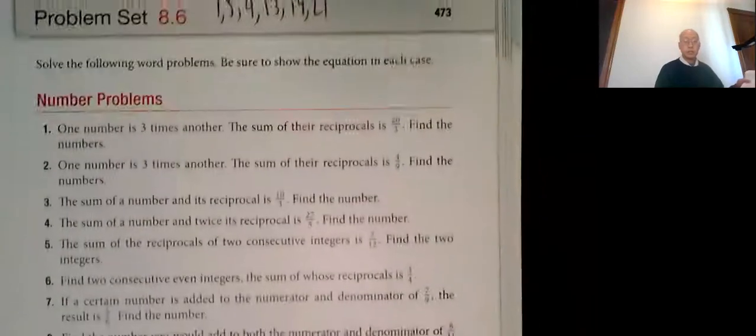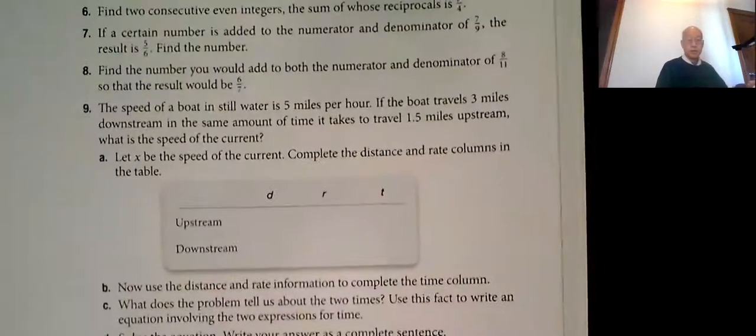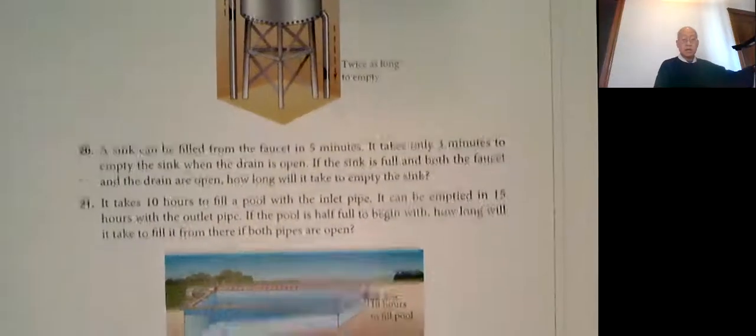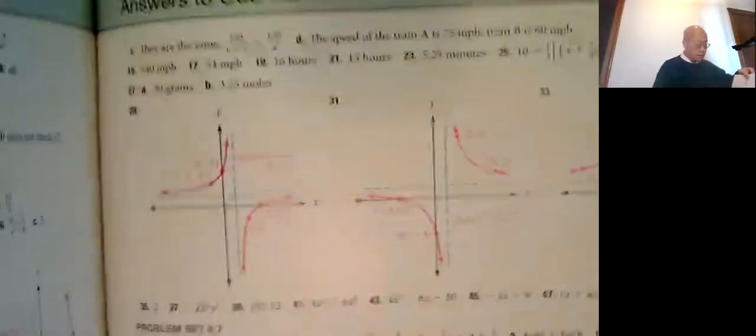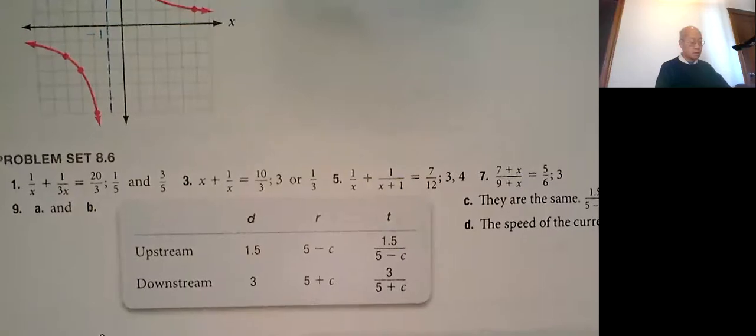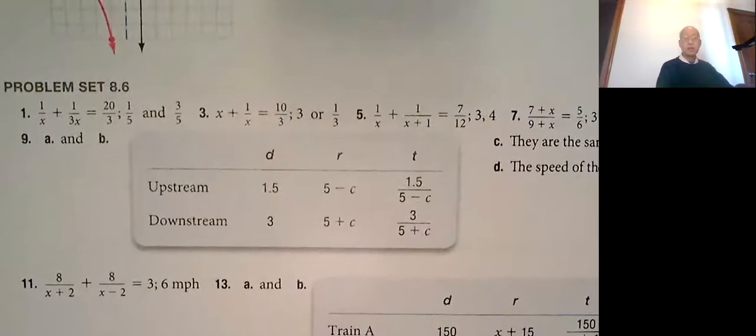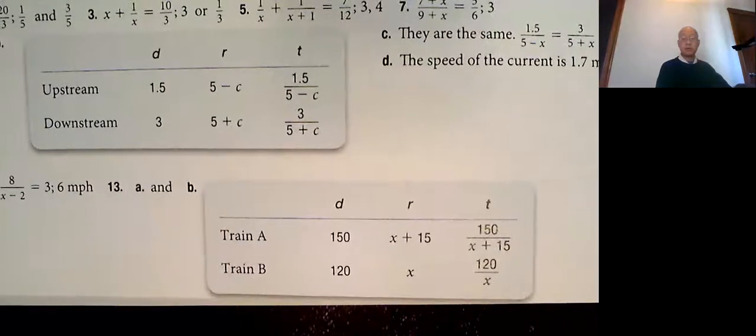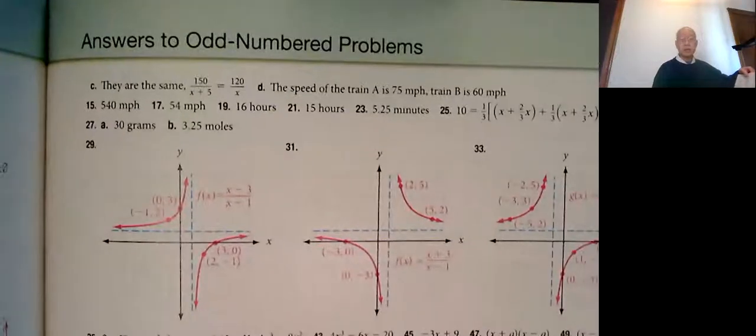Problems 1, 5, 9, 13, 19, and 21. So if you can see 1 and 5 there, 9, and 13, 19, 21. This is on page 475, 19 and 21, there they are.